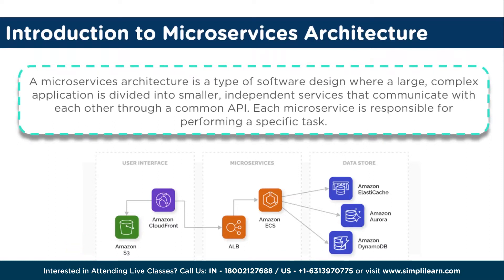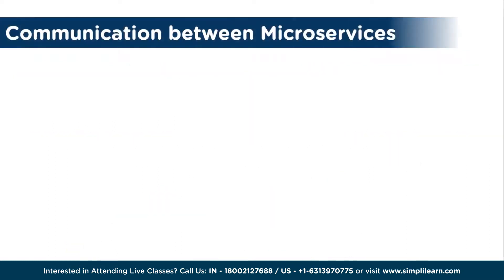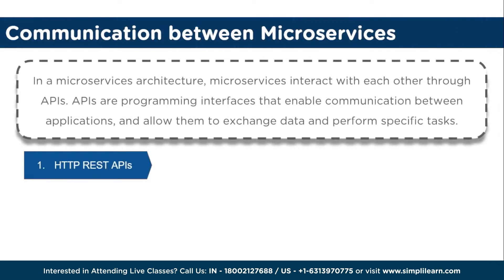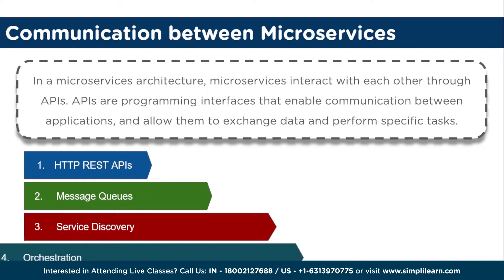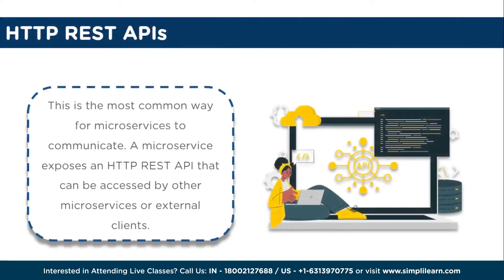So how do these microservices interact with each other? They communicate through well-defined APIs using lightweight protocols like HTTP, or messaging systems like RabbitMQ. This decoupled communication allows each service to evolve independently without impacting the entire system. Microservices interact using various communication protocols and mechanisms — here are some common ones.